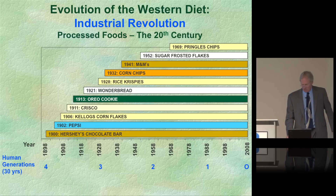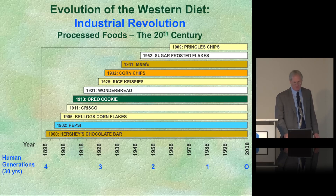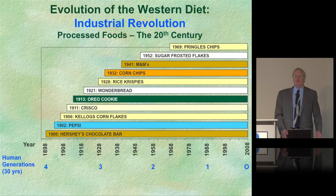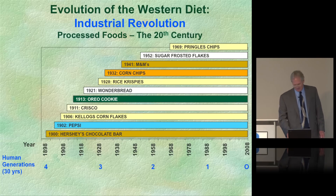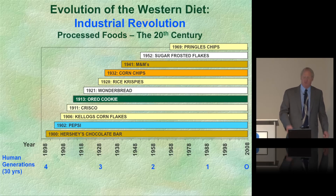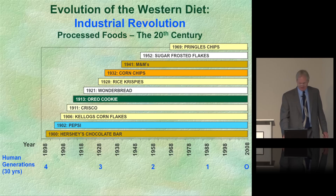Here's a fun timeline of when processed and junk foods came about: Hershey's Chocolate Bar in 1900, Pepsi in 1902, Kellogg's Corn Flakes in 1906, Crisco in 1911, Oreos in 1913, Wonder Bread in 1921, Rice Krispies in 1928, Corn Chips in 1932, M&Ms, Sugar Frosted Flakes, and Pringles Chips in 1969.